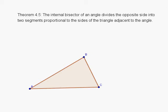Welcome to our proof of Theorem 2.5, which says that the internal bisector of an angle divides the opposite side into two segments proportional to the sides of the triangle adjacent to the angle.